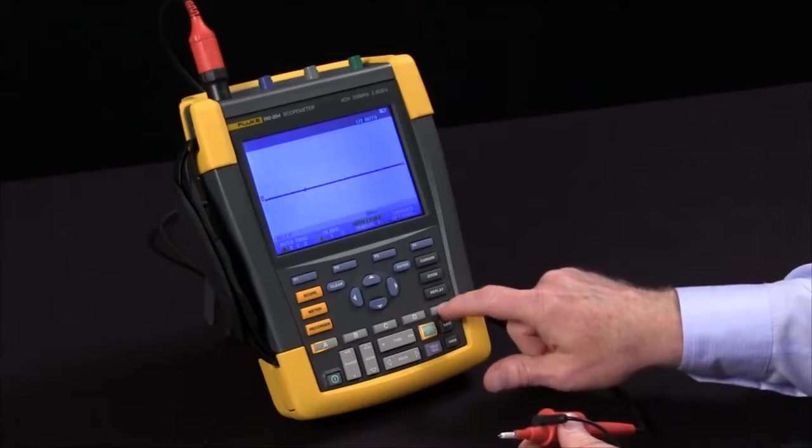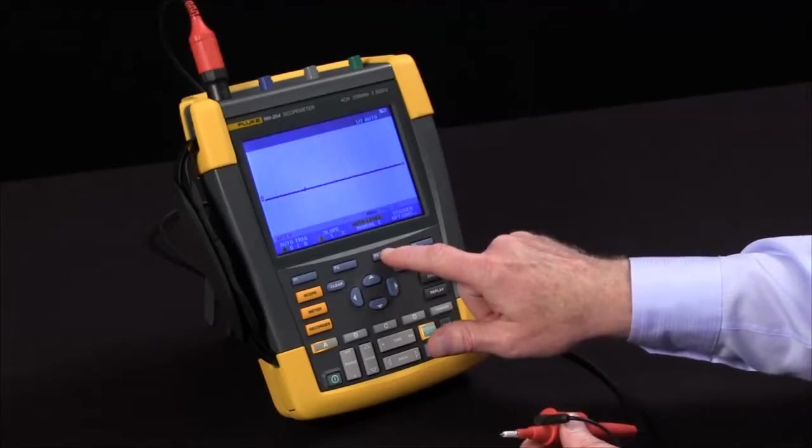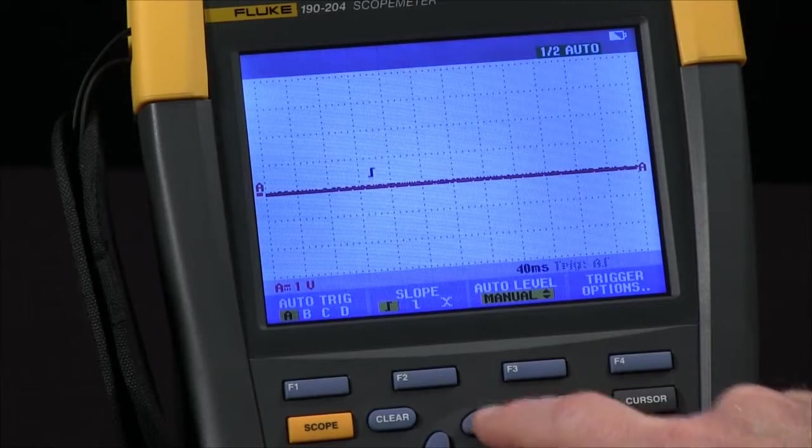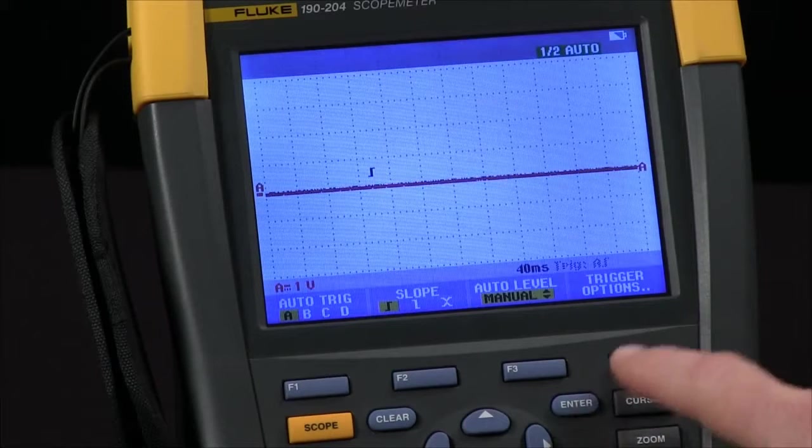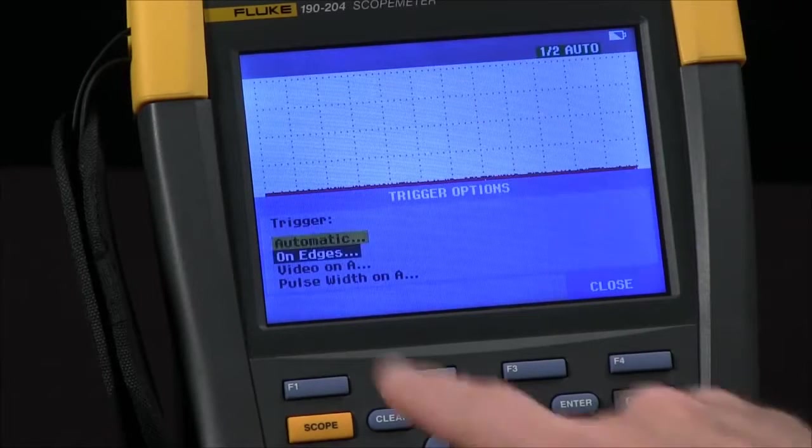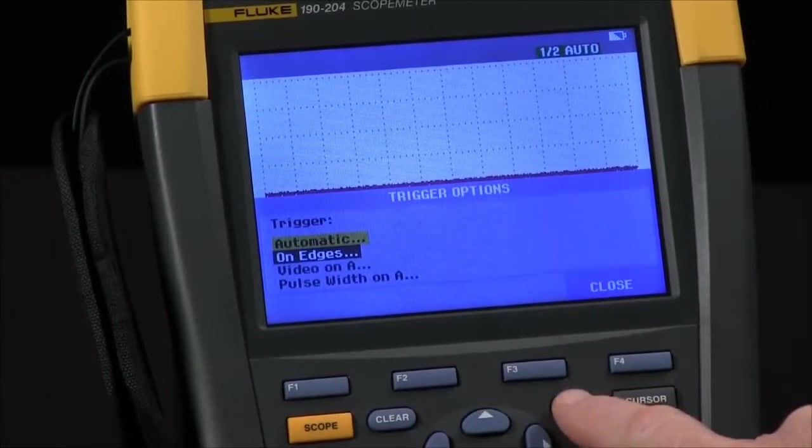Now let's go to trigger. We'll go to manual with the F3 key and move the level up slightly above my baseline. I'll come to trigger options with the F4 key and select edge trigger. Use the enter key.